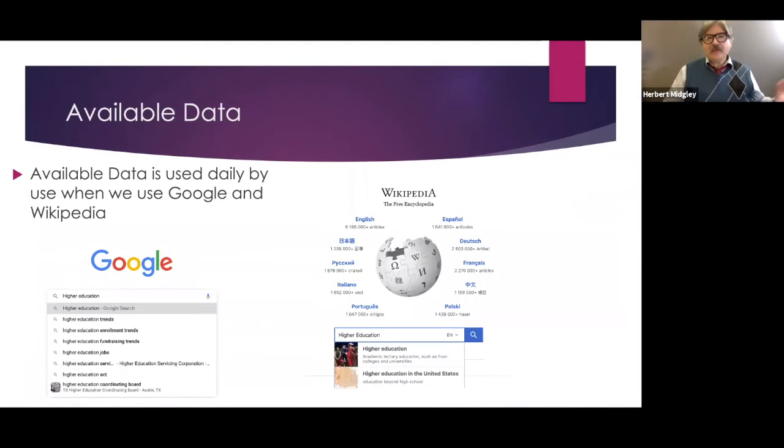So available data, we use it all the time. Whenever we Google something, whenever we go on Wikipedia, whenever we use the Internet to search something, to find information, there's data that's available for us to use and figure out. We're really mining available data all the time. I typed in higher education in Google or typed it into Wikipedia to find some information. From there, you can maybe find other pieces of information that can take you to other places. It's really convenient to have that today, in comparison to what we had in the past.